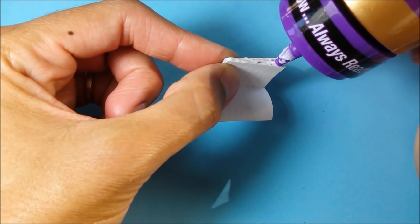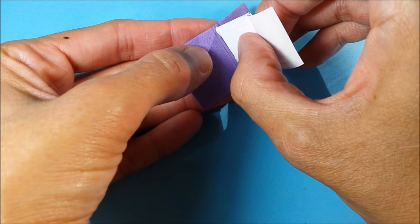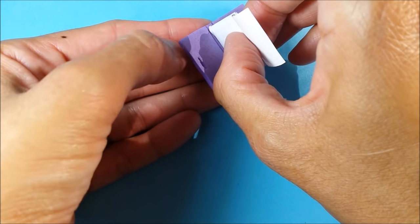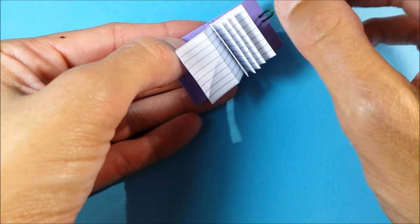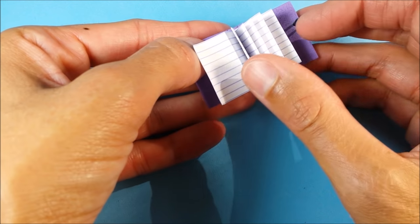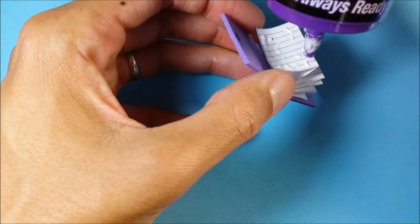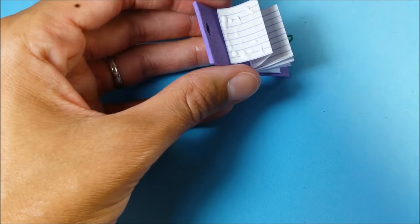I just glue the rest of it to the center part of my diary. You'll probably want to wait until that dries, otherwise everything will kind of slide around. But then I glue the front and back pieces to the sides of my journal.